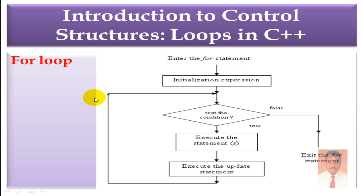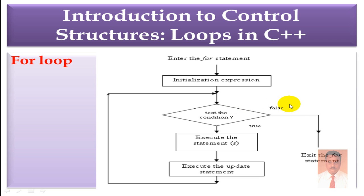Now we will see the Flow Control for the For Loop. First, Initialization, followed by the Test Condition. If the Test Condition is True, it will execute the Statement and then execute the Update Statement. Again it will check for the Test Condition. The process will continue unless or until the Condition Fails. If the Condition is False, it exits the For Statement.